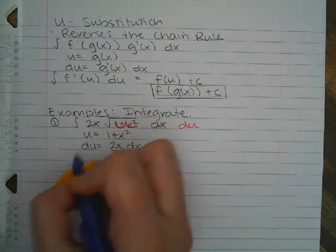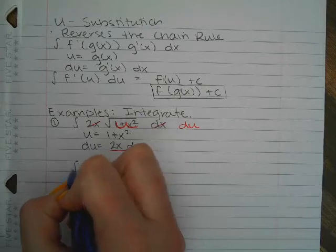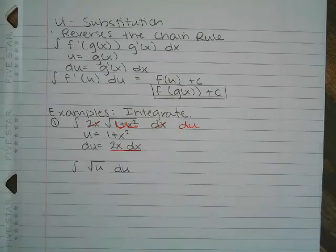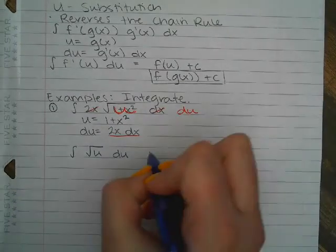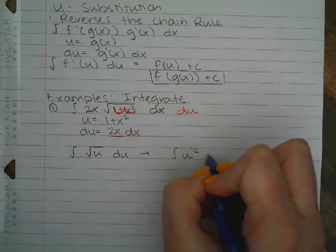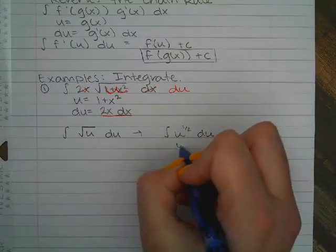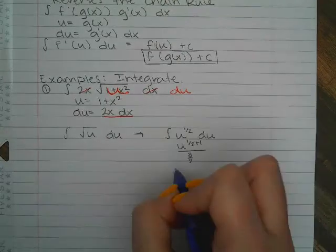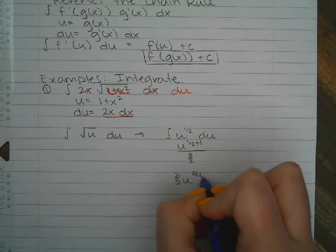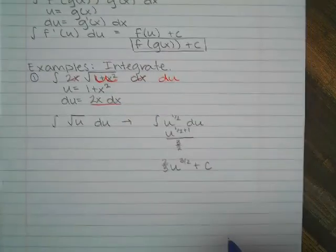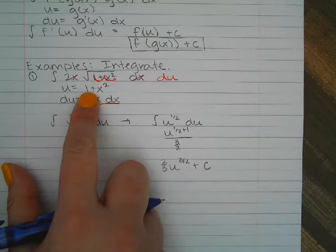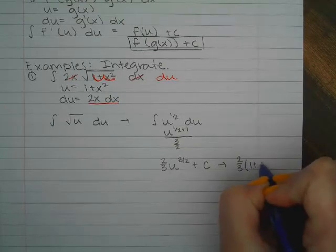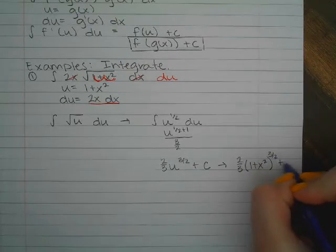Rewriting the problem just in terms of u, I have the integral of square root of u du. It'll be a little bit easier if I think of that as u to the 1/2. Using the antiderivative rule, I add 1 to the exponent and divide by that number — 3/2 — giving 2/3 u to the 3/2 plus c. Replacing u with 1 plus x squared, the final answer is 2/3 times (1 plus x squared) to the 3/2 plus c.